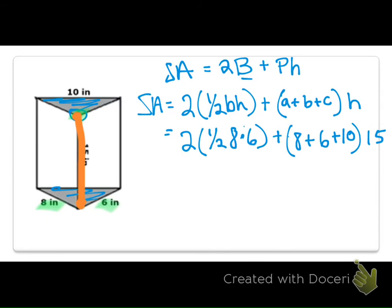So, now, when I look in here, I'm going to do, let's see, 1 half of 8 is 4, and 4 times 6 is 24, plus 8 plus 6 plus 10 is going to give me a total of 24 times 15. So, now, I just have a couple more simple steps to finish off. I know that 24 times 15, if I type that in real quick, that's going to give me 360. And I need 2 times 24, which is going to give me 48.